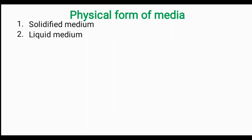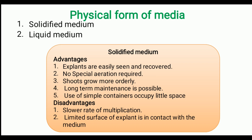So those are all the nutrient requirements for tissue culture medium. Now we will see the physical forms of the medium. Media is generally prepared in two conditions: solid medium and liquid medium. For solid medium, we add up to 0.8% agar, melt it and cool it down, and it becomes semi-solid. The key advantages are that explants are easily seen and recovered, no special aeration is required, shoots grow more orderly, long-term maintenance is possible, and simple containers can be used occupying little space. The key disadvantage is the slower rate of multiplication and limited surface of explant in contact with the medium.